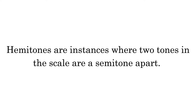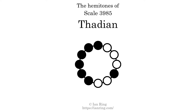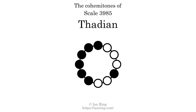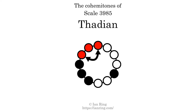Hammertones are instances where 2 tones in the scale are a semitone apart. This scale has 5 hammertones. They are at positions here, here, here, here, and here. Co-hammertones are instances where 2 hammertones are beside each other. This scale has 4 co-hammertones. They are at positions here, here, here, and here.